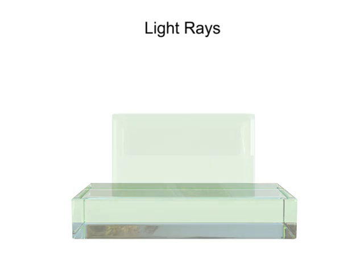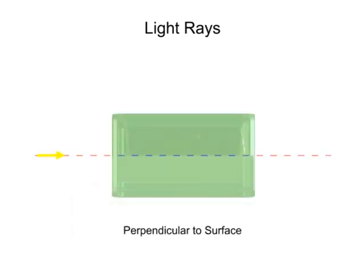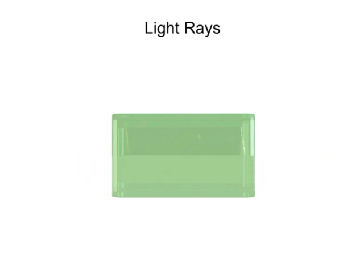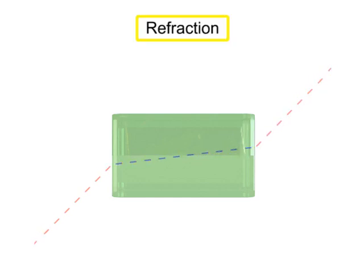If the light enters into a medium perpendicular to the surface, it passes straight through, but at a slower speed. However, if the light beam arrives at the medium surface at an angle, not only will its speed be reduced, but it will bend due to a process called refraction.